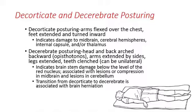Decerebrate posturing is associated with lesions like a tumor, a stroke, or pressure building up in the midbrain compressing it, and cerebellar lesions can also cause it. The transition from decorticate to decerebrate posturing is associated with herniation of the brain — due to massive swelling pushing the brain through the foramen magnum — a very, very bad sign. Treatment often involves craniotomy, removing part of the skull to allow the brain to decompress.